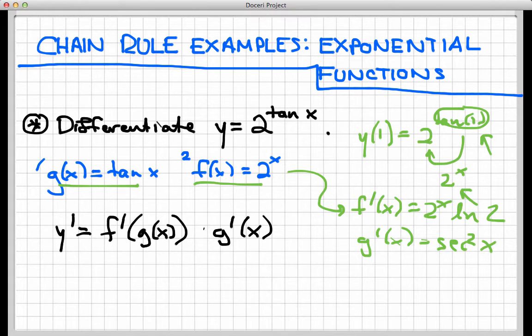So now all I have to do is put some pieces together here, and I have f prime of g of x. That's 2 to the, and I'll leave a space there where there was an x before, times log 2. And now what goes in here is the original function g of x, and that was tangent of x.